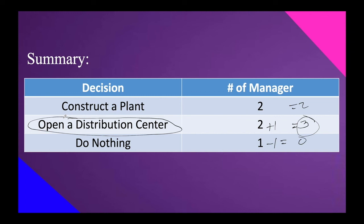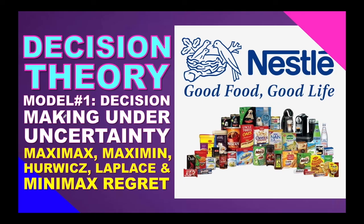That sums up our first model of decision theory: decision-making under uncertainty. The five criterions are Maximax, Maximin, Hurwicz, Laplace, and Minimax Regret — don't forget these, as they appear in CIE examinations. We still have three models left, which will be discussed in the next presentation. Keep safe always, and see you next time.